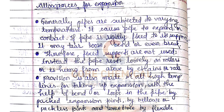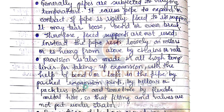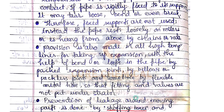Instead of fixed supports, pipelines rest on base plates or are supported by spring-type or T-linear supports. Provisions are also made in all high-temperature lines to accommodate expansion with the help of bends or loops in the pipe, packed expansion joints, bellows, packless joints, or flexible metal hose, so that fittings and valves are not put under strain.